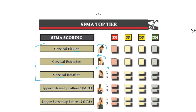Next we look at shoulder movements. With the hand open, can they touch the opposite scapula by reaching behind their back? And can they touch the opposite scapula by reaching over and behind their head? These are performed on both the left and right sides in either order, in the standing position.